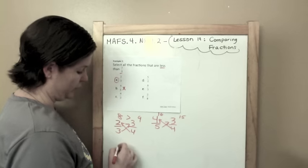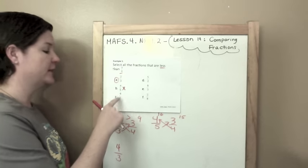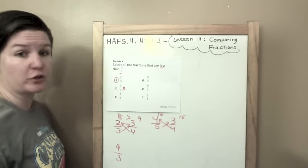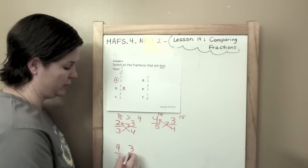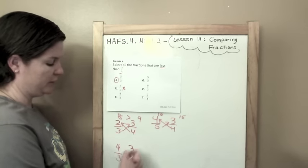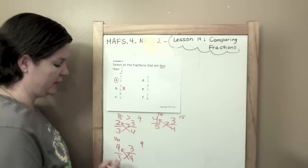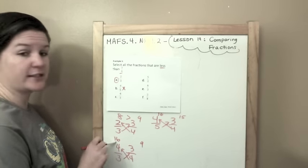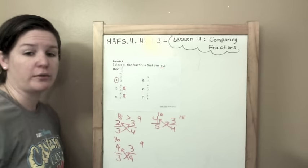Let's do 4 thirds. Which I already know is bigger because it's a fraction greater than 1. But just to show you how you can use the method I've been teaching. 3 times 3 is 9. 4 times 4 is 16. 4 thirds has 16 which is greater. So 4 thirds is not less than 3 fourths.